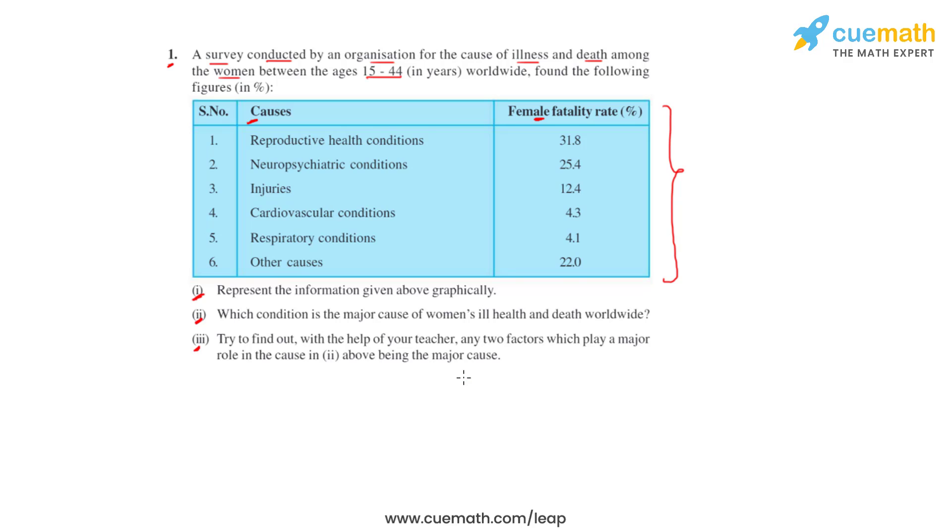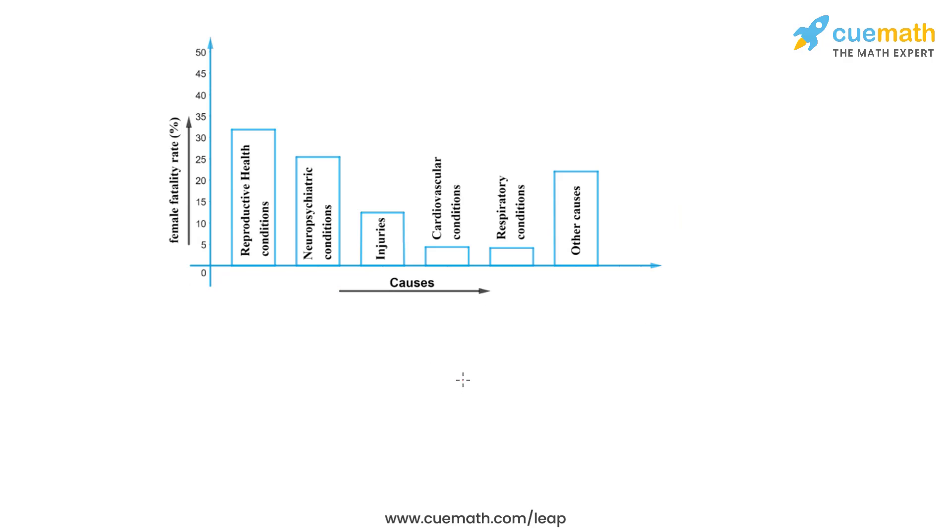We will start with the very first bit. The above data can be represented graphically using a bar graph. The bar graph that we have got, we can see that we have represented the causes on the x-axis, maintaining equal widths for all the bars and with equal gaps in between.